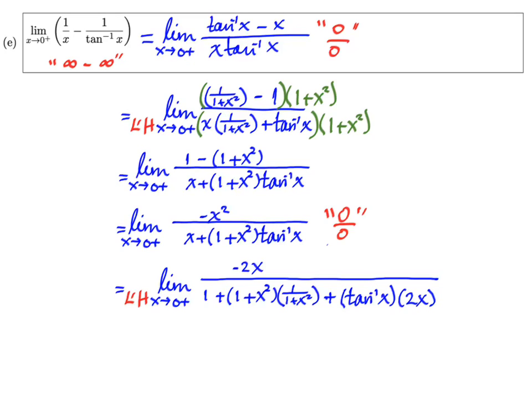Good, let's clean that up a little bit. So we get the limit x approaches zero from the right of -2x over 1 plus 1 plus tan⁻¹x times 2x.